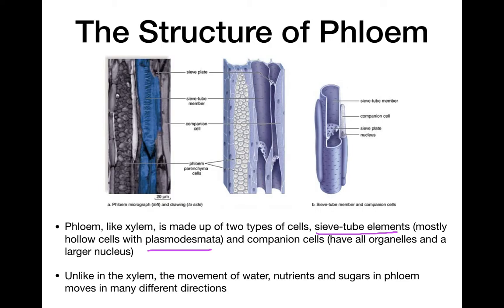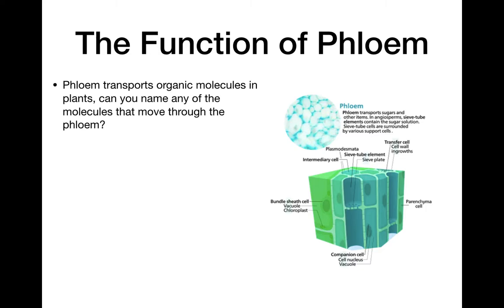Attached to every sieve tube element is what's called a companion cell. The companion cell is much smaller — its job is to keep the sieve tube alive. All the metabolic processes that would normally happen in the plant are done in the companion cell, with very limited activity in the sieve tube itself. The sieve tube needs to be mostly hollow, so they work together. Unlike xylem, phloem can move vertically — up and down — as well as side to side.